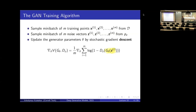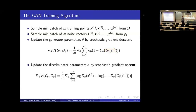We use the gradient to make the discriminator believe the fake data point is real. Simultaneously, we update the parameters of the discriminator using gradient descent to optimize the cross-entropy objective. We maximize the first term and minimize the second term of the objective.